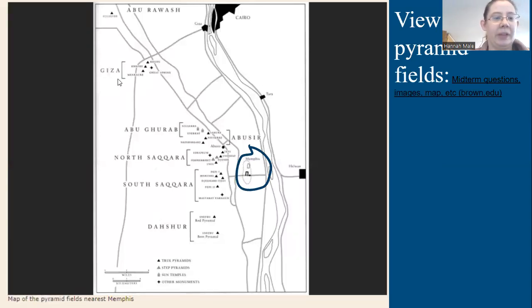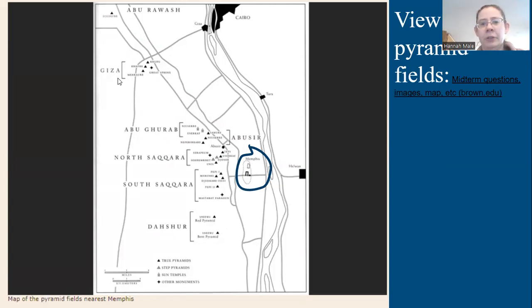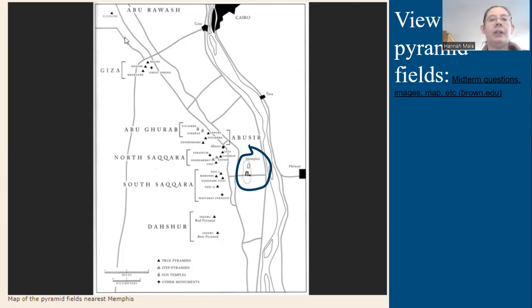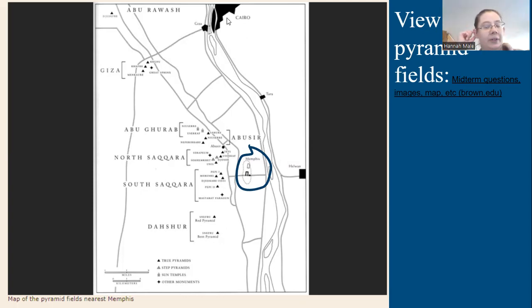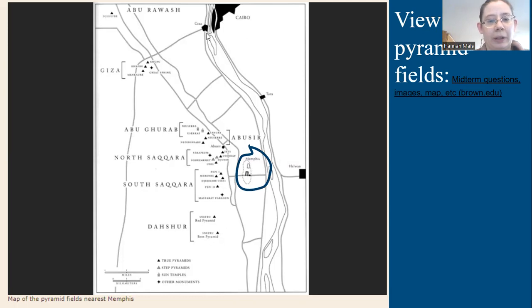If we're talking about Giza, it's within that pyramid field structure. You can see that it's almost right across from modern day Cairo, which is why as modern day Cairo expanded, if we go to see the pyramids at Giza now, it's literally right up against some of the city buildings there.